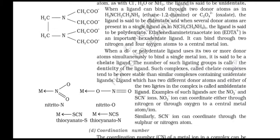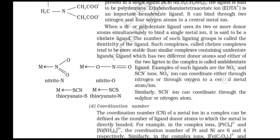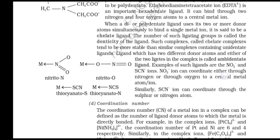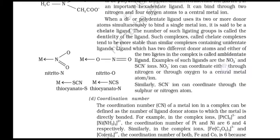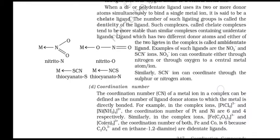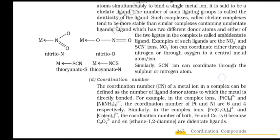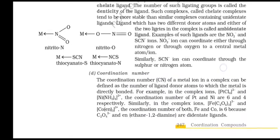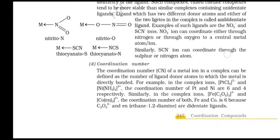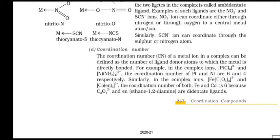Ethylenediaminetetraacetate ion (EDTA4-) is an important hexadentate ligand. It can bind through two nitrogen and four oxygen atoms to a central metal ion. When a di- or polydentate ligand uses its two or more donor atoms simultaneously to bind a single metal ion, it is said to be a chelate ligand. The number of such ligating groups is called the denticity of the ligand. Such complexes, called chelate complexes, tend to be more stable than similar complexes containing unidentate ligands.